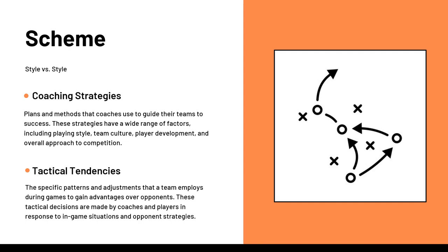The next sub-component is tactical tendencies — the specific patterns and adjustments a team employs during games to gain advantages over opponents. These decisions are made by coaches and players in response to in-game situations and opponent strategies. Coaching strategies are a year-long cultural effect on your club, while tactical tendencies are more of in-game approaches and how a coach or player will react to situations.